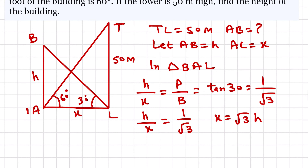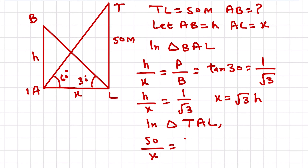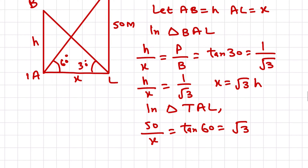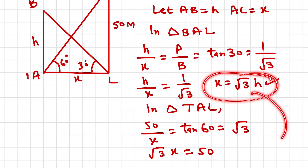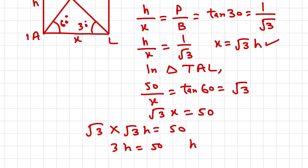Now taking the second triangle TAL. In triangle TAL, 50 upon x equals tan 60°. Tan 60° is root 3, so root 3 × x = 50. Putting x = root 3 × h here: root 3 × (root 3 × h) = 50, so 3h = 50, giving h = 50/3, that is 16.6 meters. This is the height of the building. Question number 9 is done.